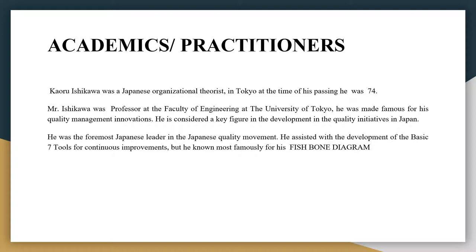Mr. Ishikawa was a professor in the Faculty of Engineering at the University of Tokyo. He was made famous for his quality management innovations and is considered a key figure in the development of quality initiatives in Japan. He was also the foremost Japanese leader in Japanese quality improvement. He assisted with the development of the basic seven tools for continuous improvement, but he is most famously known for his fishbone diagram.